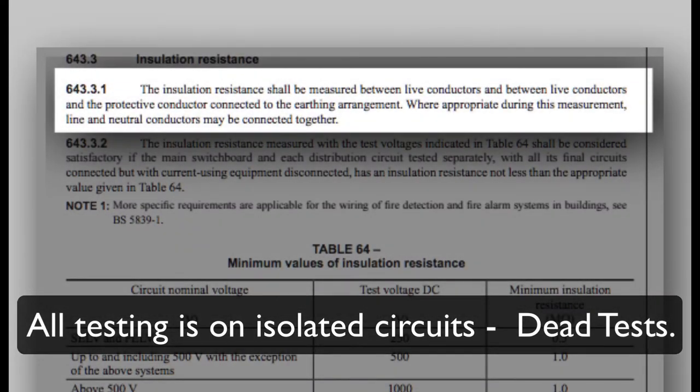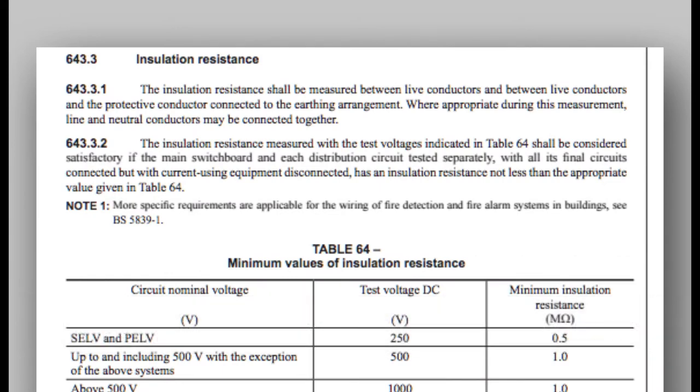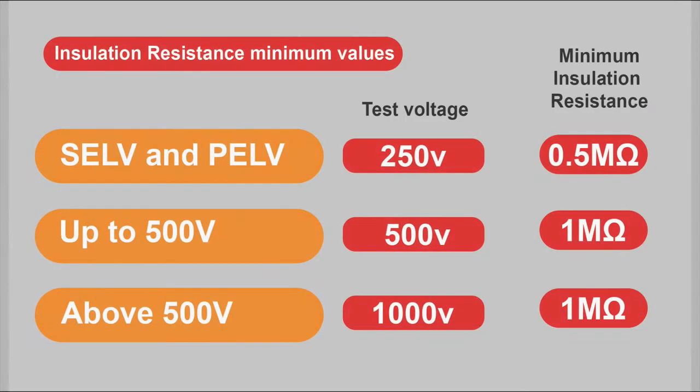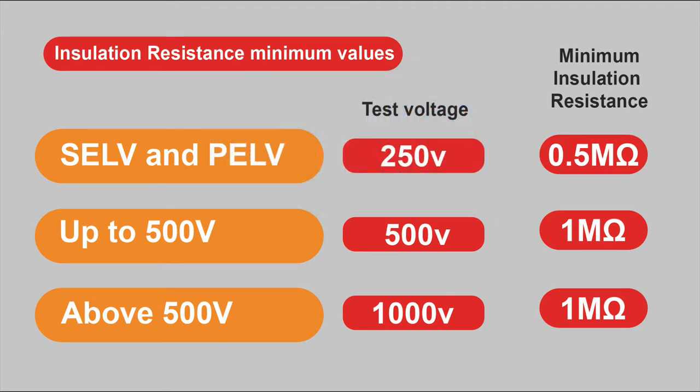BS 7671 tells us that insulation resistance shall be measured between live conductors and between live conductors and a protective conductor connected to the earthing arrangement. Where appropriate, line and neutral conductors may be connected together. These are the test voltages you should test at and the minimum insulation resistance values. For periodics, anything around 2 megaohms should require further investigation, but for initial verification you are expecting off-the-scale results.